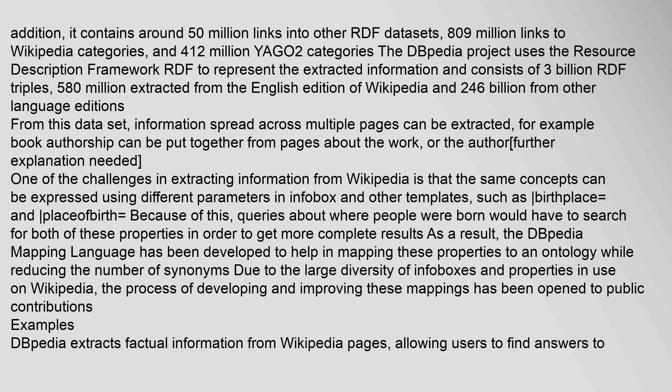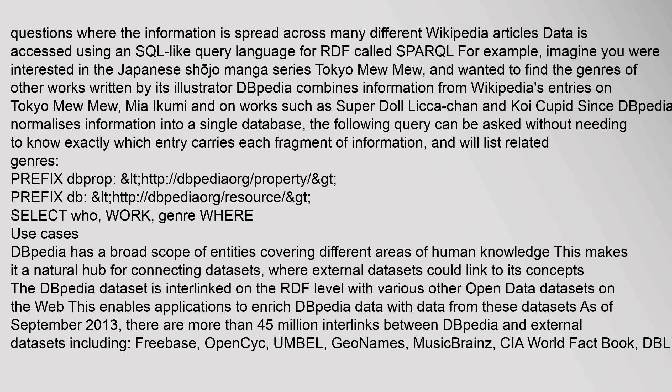The process of developing and improving these mappings has been open to public contributions. DBpedia extracts factual information from Wikipedia pages, allowing users to find answers to questions where the information is spread across many different Wikipedia articles. Data is accessed using an SQL-like query language for RDF called SPARQL. For example, imagine you were interested in the Japanese shoujo manga series Tokyo Mew Mew and wanted to find the genres of other works written by its illustrator. DBpedia combines information from Wikipedia's entries on Tokyo Mew Mew, Miya Ikumi, and on works such as SuperDoll LICCA-Chan and Koi Cupid. Since DBpedia normalizes information into a single database, the query can be asked without needing to know exactly which entry carries each fragment of information, and will list related genres.